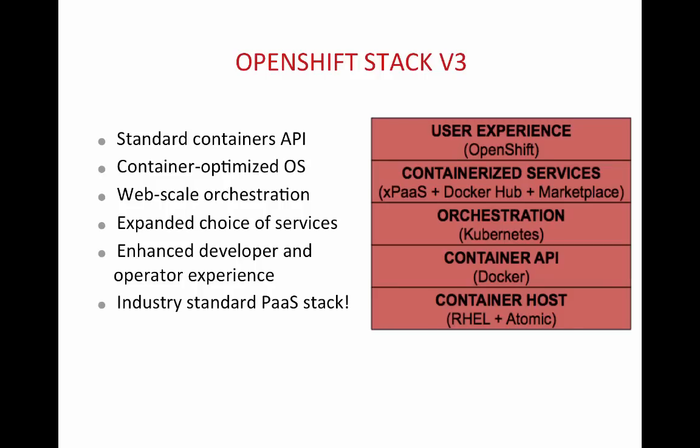On top of this container-driven model and orchestration using Kubernetes are the containerized services that OpenShift provides. The first is XPaaS, which is like an application server on top of OpenShift — JBoss EAP, for example, or integration on OpenShift using JBoss Fuse, BPM, BRMS, or Mobility. All these are XPaaS services that come on top of a PaaS. You also get a Docker Hub where your Docker images would be registered, and a marketplace through which other vendors can provide Docker images for you to use.